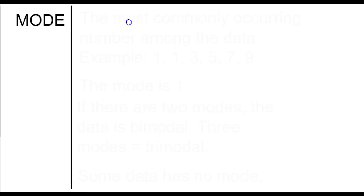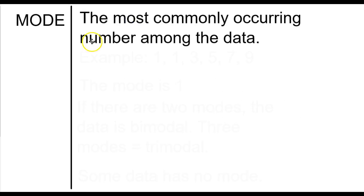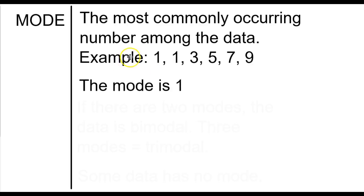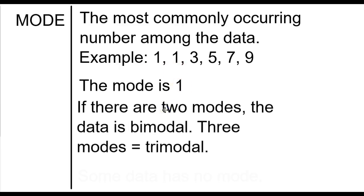The last one that we really look at in this class is the mode. The mode is the most commonly occurring number among the data set. For example, if you had these numbers, the mode is 1. That's the one that occurs most often.